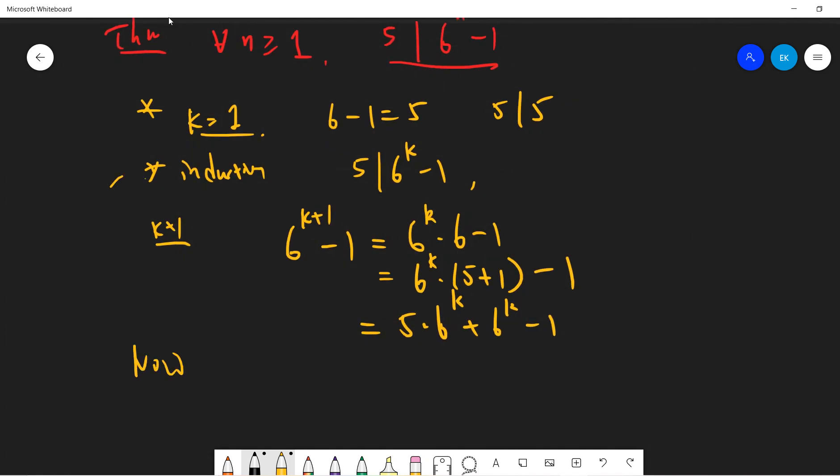Now by induction, I know that 5 divides 6 to the k minus 1, so this guy is divisible by 5 and this guy is also divisible by 5.